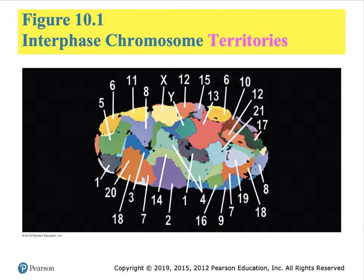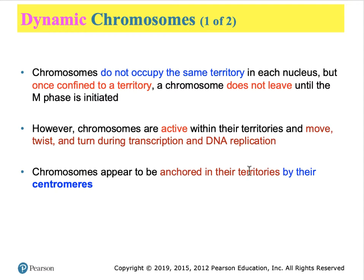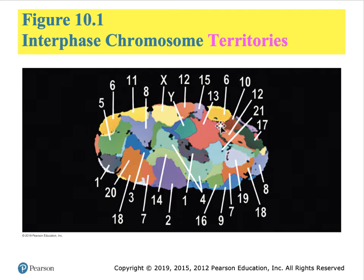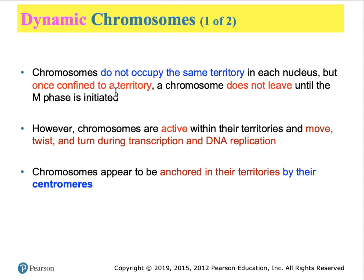Different fluorescent dyes can label each interphase chromosome uniquely. In the nucleus from a chicken cell, we can see that each chromosome inhabits a defined territory, with homologues being in different places. The chromosomes do not occupy the exact same arrangement within the nucleus—you won't find both homologues in the same spot. Once a chromosome has been given a territory, it tends to stay there until the next cell cycle. Chromosomes are active within their territories—they can move, twist, and turn during transcription and DNA replication. They appear to be anchored by their centromeres to nucleoplasmic proteins.